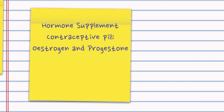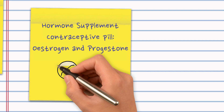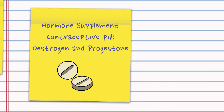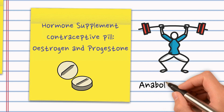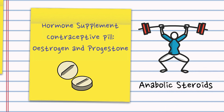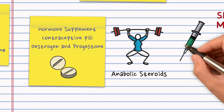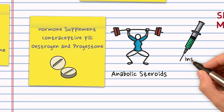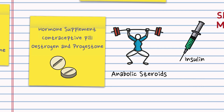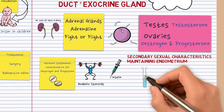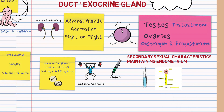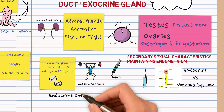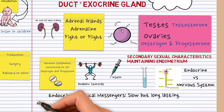Study the secondary sexual characteristics and the endometrium — you have to know examples of hormone supplements. For example, the contraceptive pill can be based on estrogen and progesterone. Know that anabolic steroids are used to build muscle mass and can sometimes be abused with negative impacts. Also know that insulin is used to treat diabetes. Finally, be able to compare the endocrine system — chemical-based messengers — with the nervous system, which uses electrical impulses.